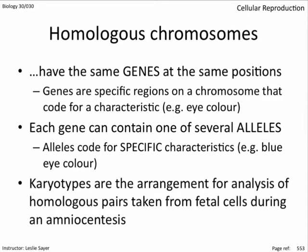Karyotypes are the arrangement for analysis of homologous pairs taken from fetal cells during an amniocentesis. This technology is usually employed to determine the chromosomal health of a fetus. Geneticists can look for chromosomes that have abnormalities like inverted segments, missing segments, missing chromosomes, duplicated segments, or even extra chromosomes. We'll talk more about missing and extra chromosomes later in this unit, once we learn how these abnormalities come about.